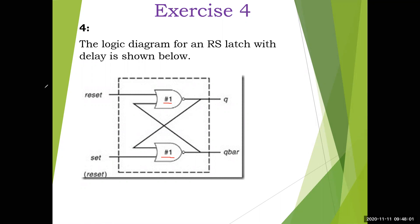Note down the question. The logic diagram for an RS latch with delay is as shown below. Delay is included in the gate itself — one time unit delay for both the NOR gates. This is an RS latch. Set and reset are the inputs and Q and Q-bar are the outputs. Very simple circuit.